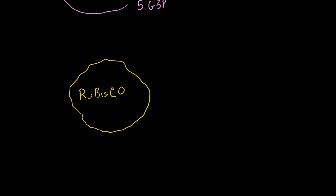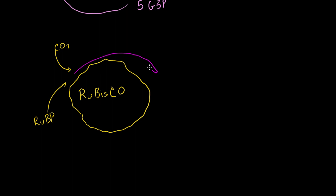When the Calvin cycle operates properly, you'll have some carbon dioxide attached on one part of this enzyme, and then you'll have some RuBP, or ribulose 1,5-biphosphate. They're going to react, and if everything with the Calvin cycle is going properly, they're going to be jammed together and then split into two molecules of 3-phosphoglycerate.